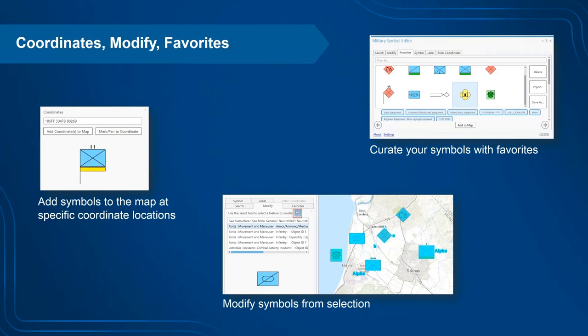You can modify symbols already on the map using the Modify tab. The embedded Select tool lets you select symbols and choose which to edit, then go through the customization workflow for symbol and label components, and click Save Edits to commit changes. You can also curate symbols with Favorites — saving frequently used symbols in a list accessible at any point in the editing workflow.